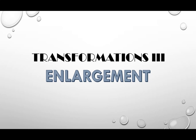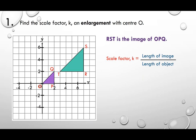Transformation 3: Enlargement. In Enlargement, you need to know the center. Second, you need to know the scale factor. To find the scale factor K in an enlargement with center O: the scale factor is the length of the image (new length) divided by the length of the original object.